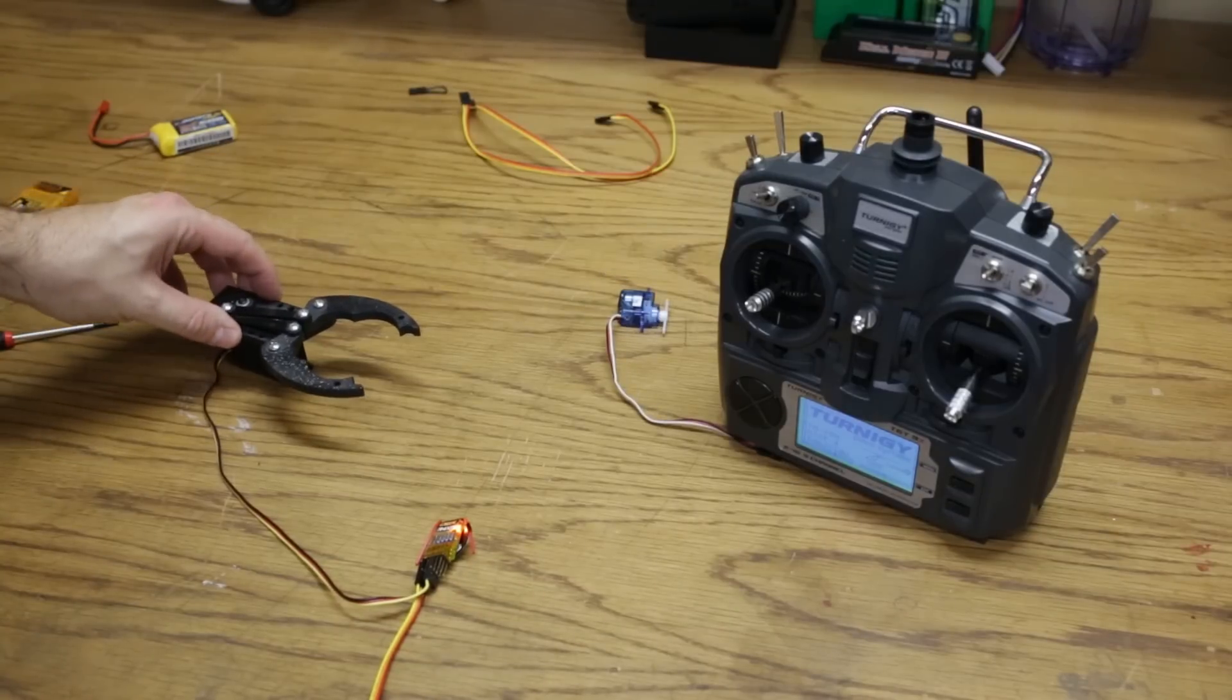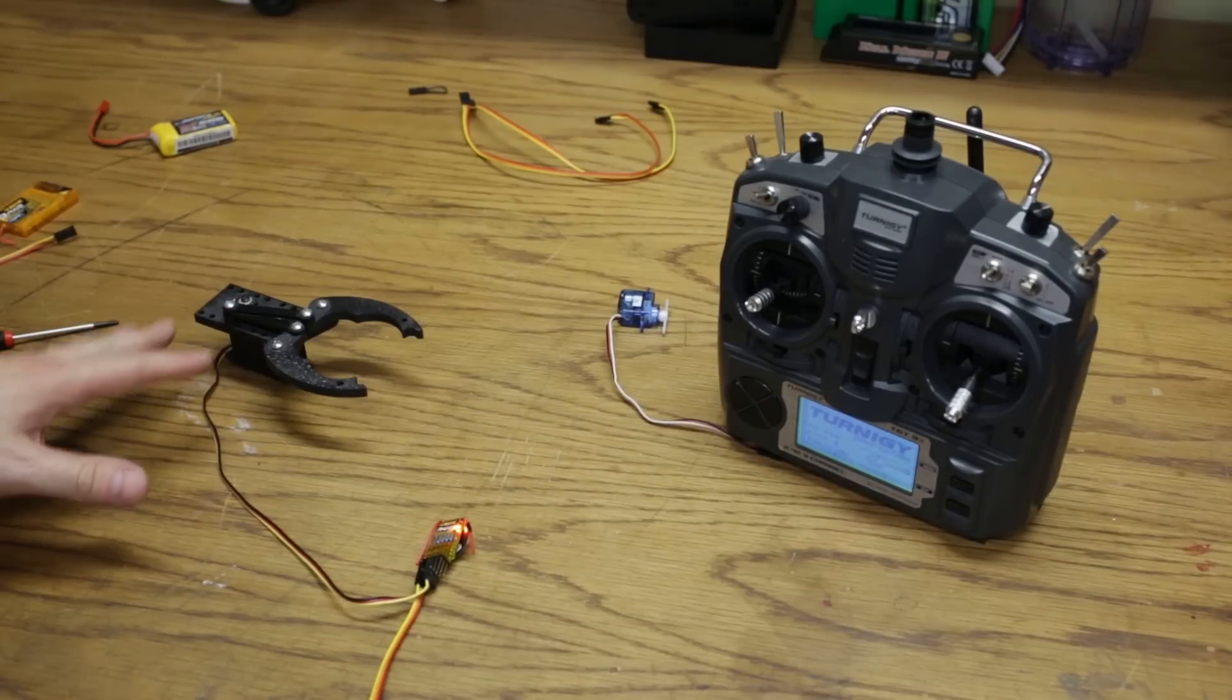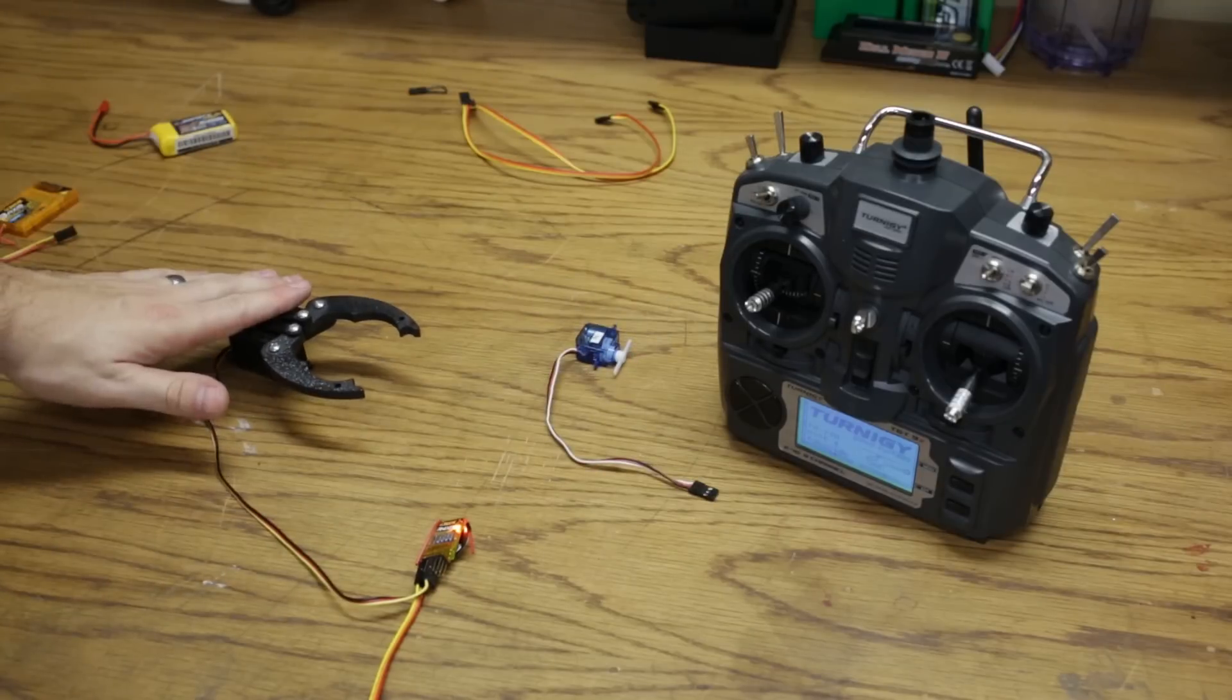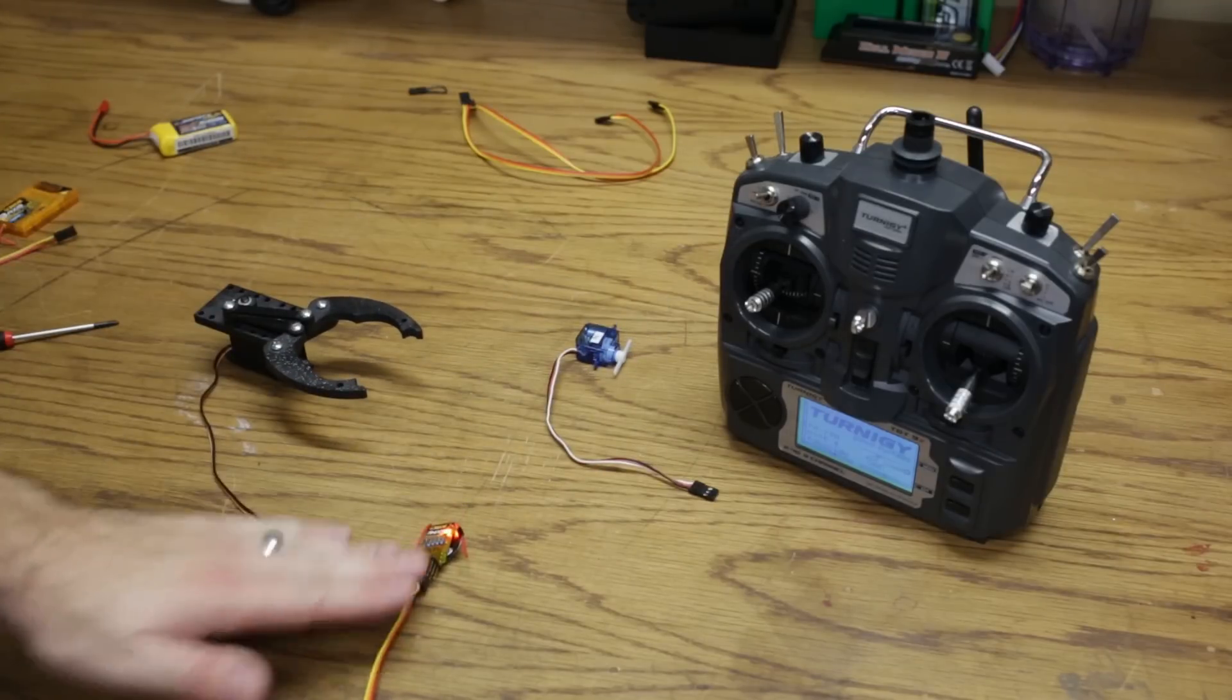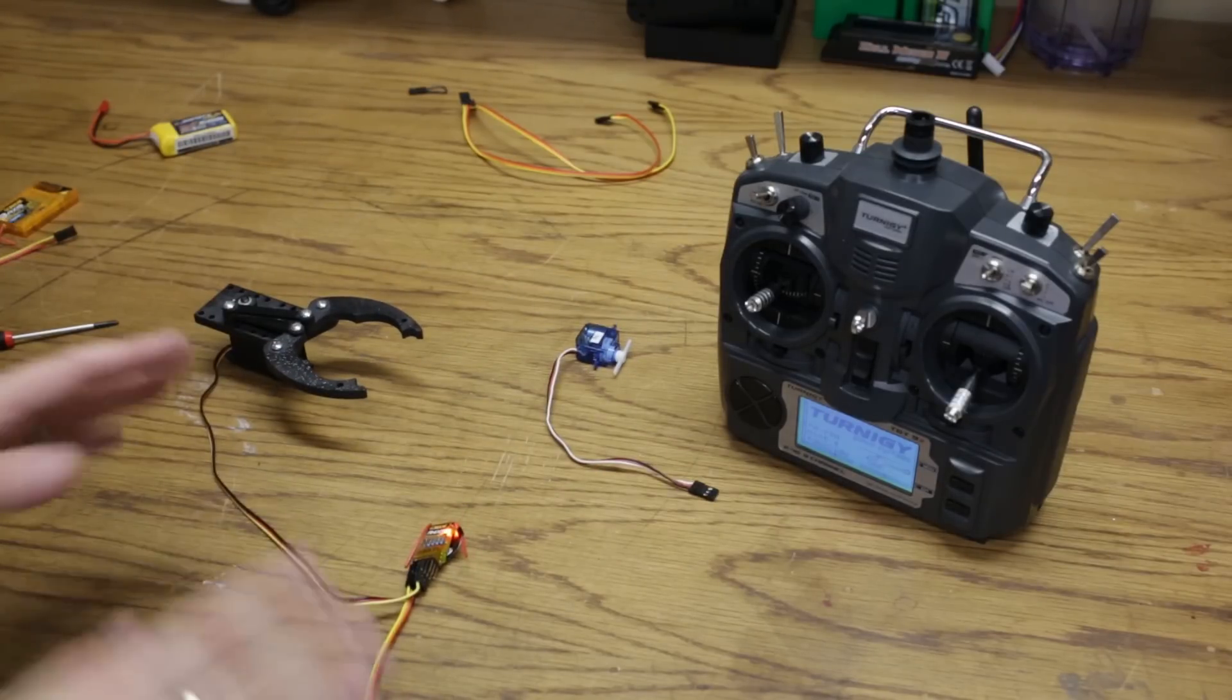That is the most basic configuration for controlling something for an Antweight. If you were going to use a flipper, this would be the entirety of your weapon system. You would simply have a servo connected directly into here, and then this would be connected directly to your battery. It's as simple as that.